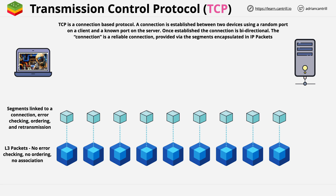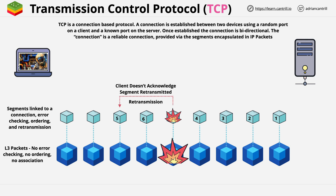These segments contain a sequence number, which means that the order of segments can be maintained. If packets arrive out of order, that's okay, because the segments can be reordered. If a packet is damaged or lost in transit, that's okay, because even though that segment will be lost, it can be retransmitted and segments will just carry on. TCP gives you this guaranteed, reliable, ordered set of segments.